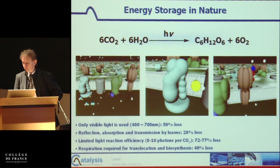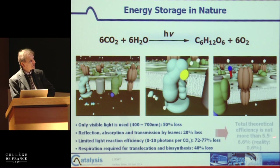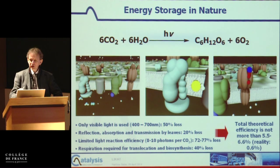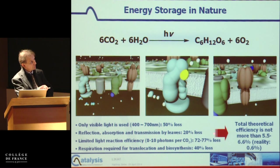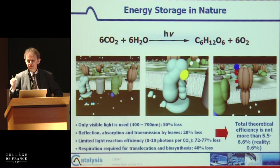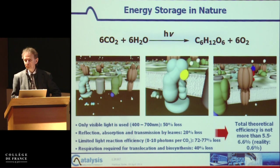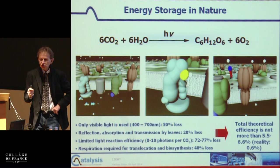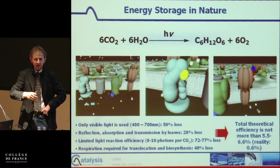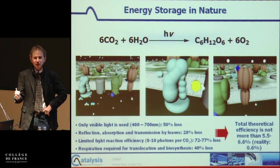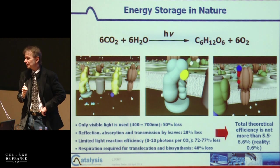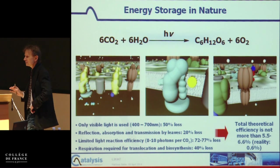I mentioned already that the process is inefficient. With an average plant, less than 1% of the original energy in light ends up as chemical energy. Therefore it is much more energy-efficient to put solar cells at a certain area, do water electrolysis to convert to chemical energy, than to grow crops and use those crops for producing electricity — that is much less efficient, because photosynthesis in principle is a fairly inefficient process.